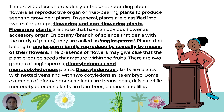Dicotyledonous plants are plants with netted veins and with two cotyledons in their embryo. Some examples of dicotyledonous plants are beans, peas, and daisies. Monocotyledonous plants include bamboo, bananas, and lilies.